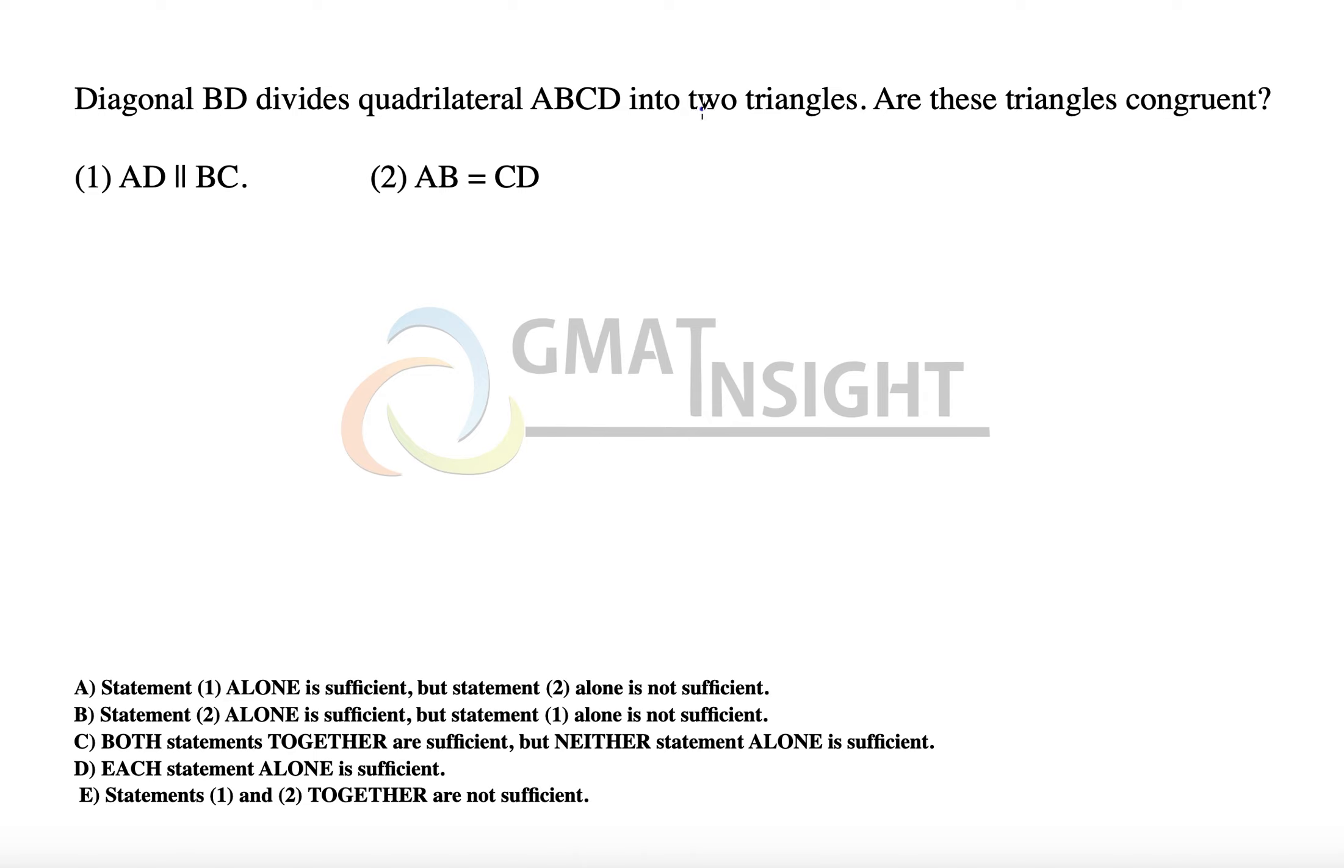Diagonal BD divides quadrilateral ABCD into two triangles. Are these triangles congruent?